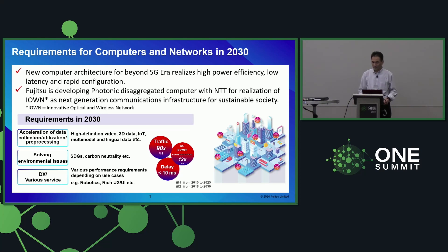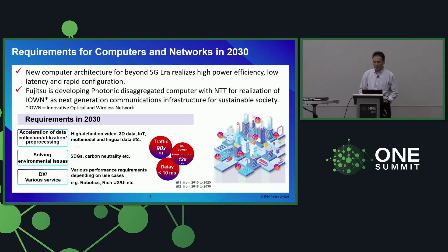We have had discussions about the requirements of network and computing platforms in 2030. There are three key requirements we concluded. First, type of data and its volume — various types of data are emerging, and sometimes they are huge, so infrastructure such as network and computer should handle them efficiently. Second, SDGs — infrastructure should address environmental issues such as power consumption reduction and carbon neutralization.